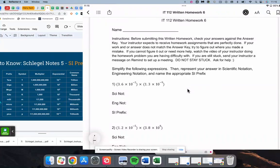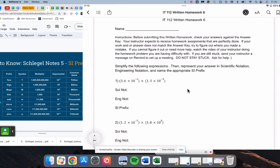So we have 3.6 times 1.3 gives us 4.68, and we're multiplying so we need to add the exponents, negative 2 plus negative 9 is negative 11.